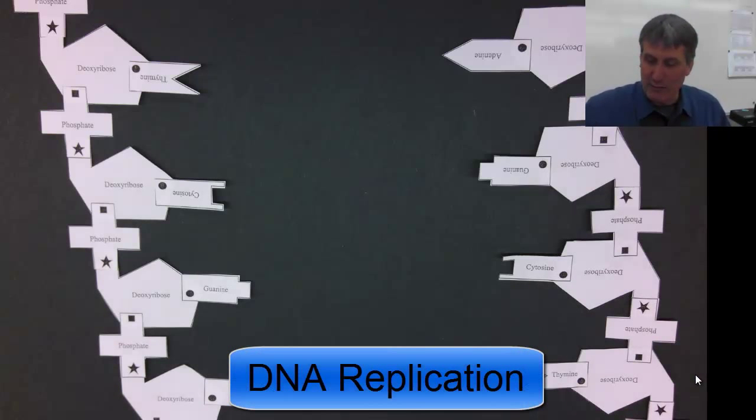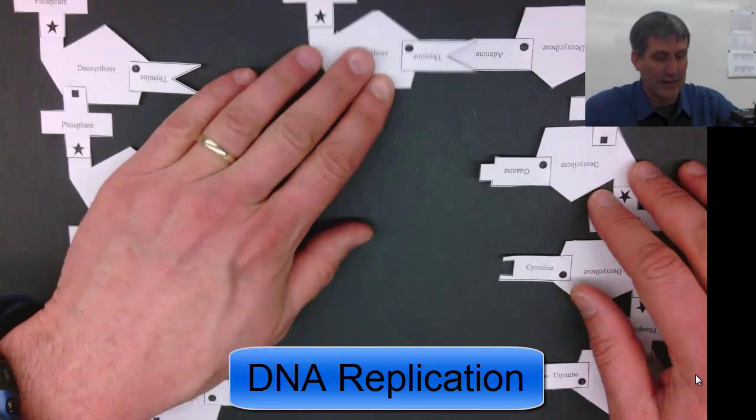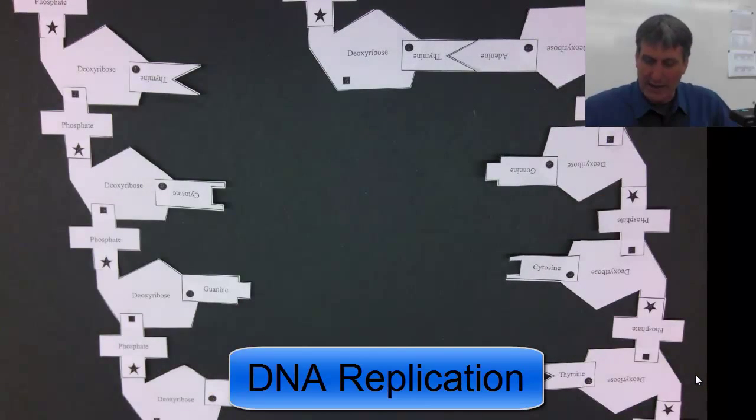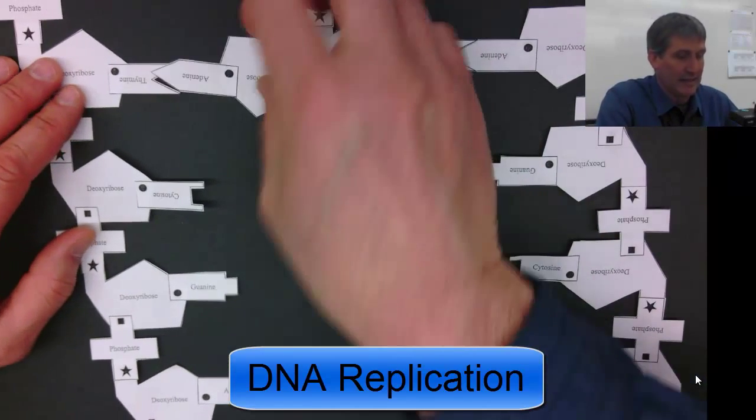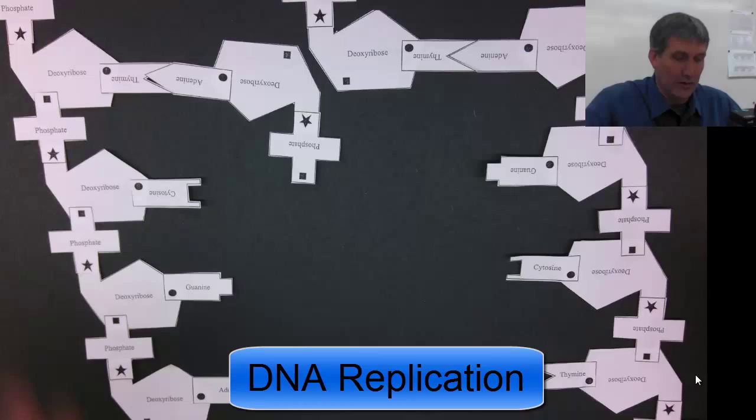The other reason that the molecule needs to be able to unzip is that when it unzips, each existing strand becomes a template to make another strand. So this allows the DNA molecule to be easily replicated. So DNA replication occurs by the strand unzipping, and then new nucleotides are brought in and match up with the existing nucleotides.